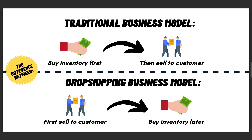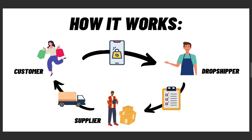Dropshipping works a little differently. You first sell the product to the customer. Once you have an order, then you procure that product from a supplier or an agent and ask that agent to directly deliver the product to the customer. So you never actually see or handle the product yourself, and that's the beauty of it — because you don't need to invest in a lot of stock or inventory beforehand. You the dropshipper: the customer purchases something, you pass on that order to the supplier, and the supplier delivers the product to the customer.